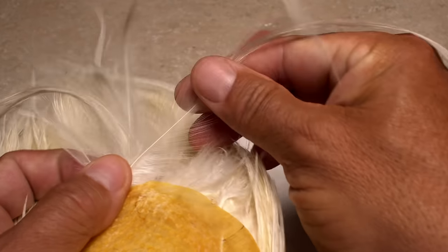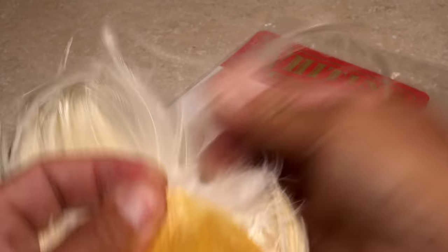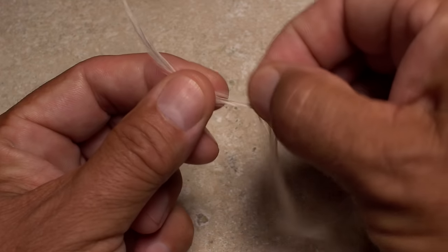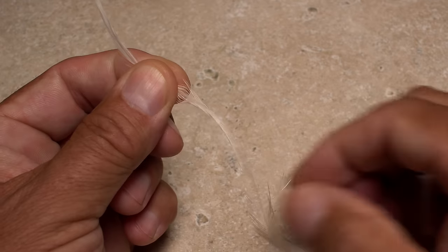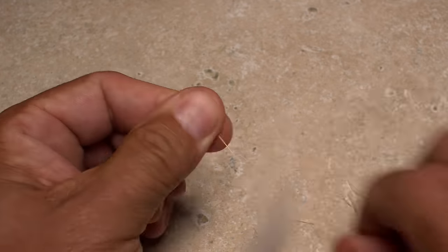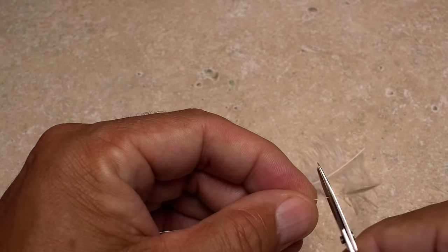To start, pluck a long nicely tapered hackle feather from a white or cream colored neck. Strip the fibers free from both sides of the stem. You don't need to do the very tip or butt which can be snipped off.